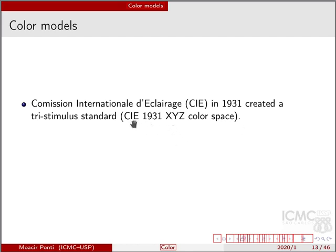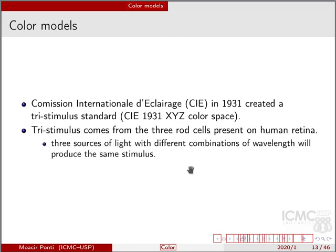This commission in 1931 created a standard that was based on the three stimulus. It was called the CIE 1931 XYZ color space. The idea comes from the three rod cells presented on the human retina, in which every three sources of light with different combinations of wavelengths will produce the same stimulus.